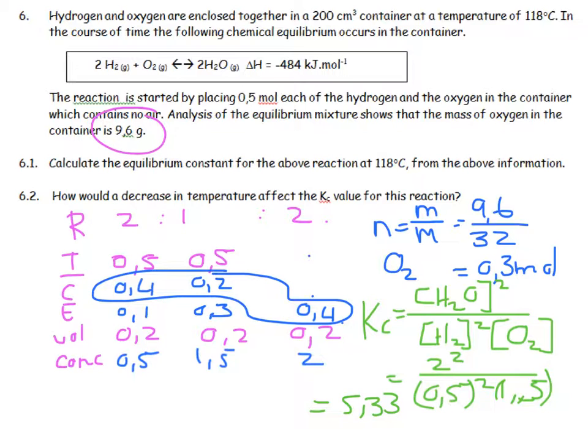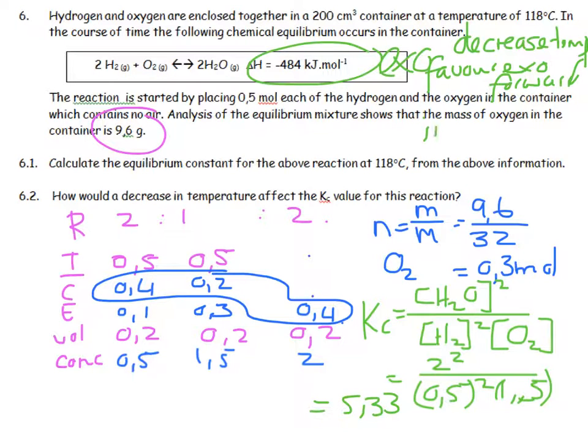How would a decrease in temperature affect the Kc of this reaction? This is an exothermic reaction. If I decrease temperature, I am going to favor exo, and therefore favor the forward reaction, and therefore increase Kc.